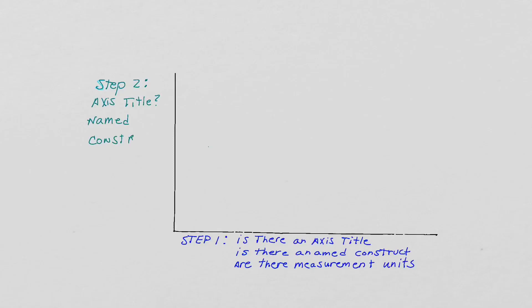In conclusion, remember these four steps. Step one, is there an axis title? Does it have a name construct? Is it presented along with the units of measurement? Step two is just like step one, but for the vertical axis.